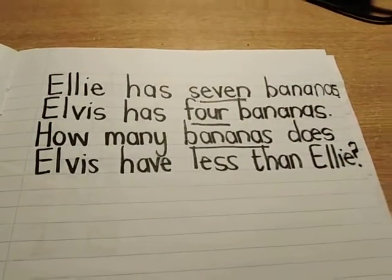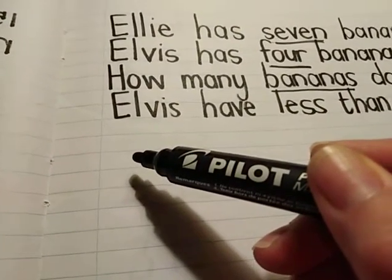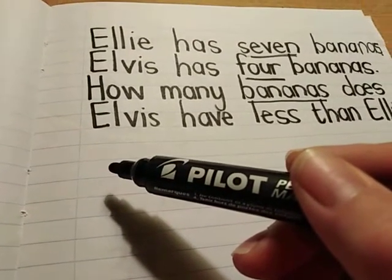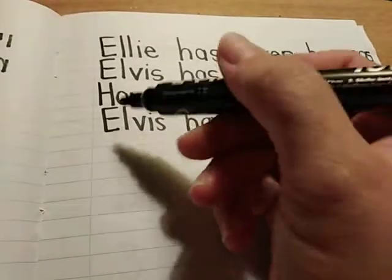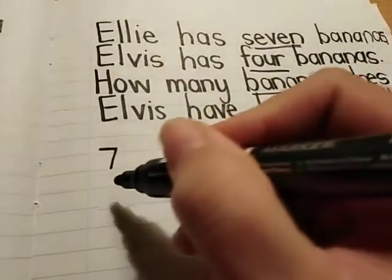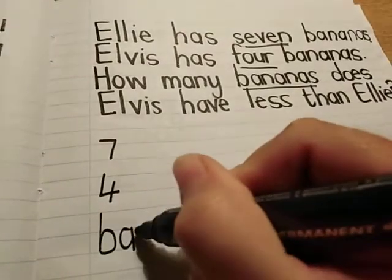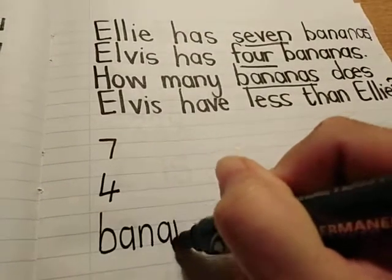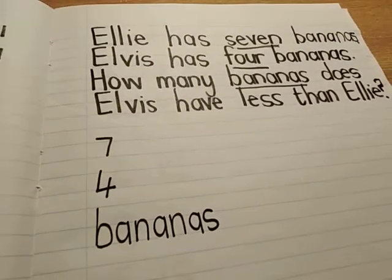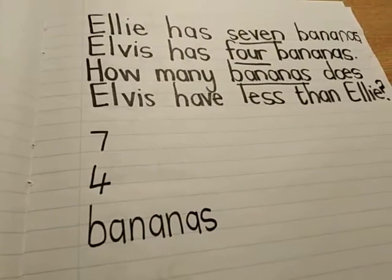How many bananas does Alvis have less than Ellie? I'm writing the information for you just so that you have the numbers to write your sum. Remember, Ellie has seven bananas and Alvis has four bananas, and we want to know at the end — this is the word — how many bananas Alvis has less than Ellie.